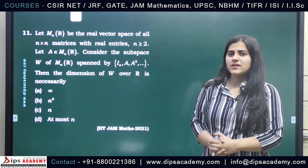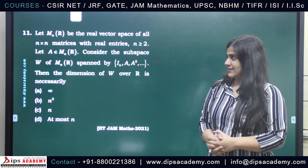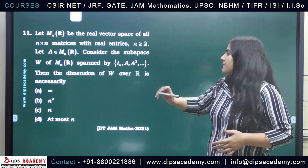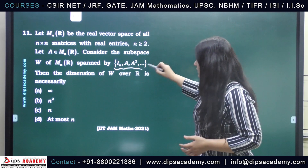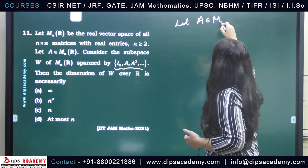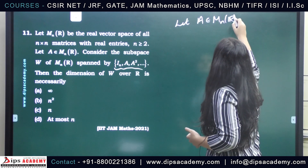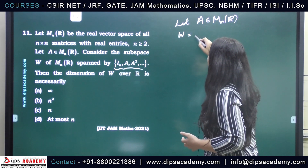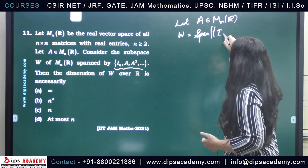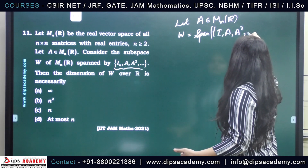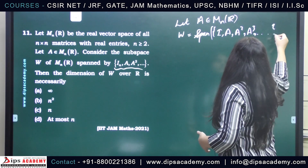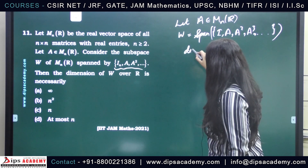In this question, we are given the space of all n×n real matrices and any arbitrary matrix A. We need to find out the dimension of the subspace W spanned by the set — that is, the span of I, A, A², and so on — the powers of A. We need to find out the dimension of W.